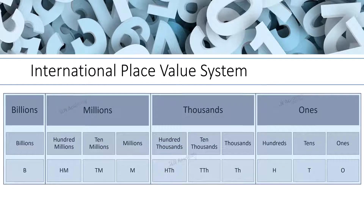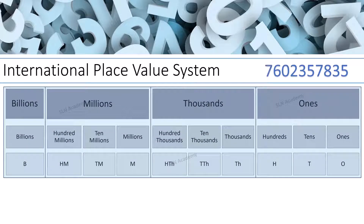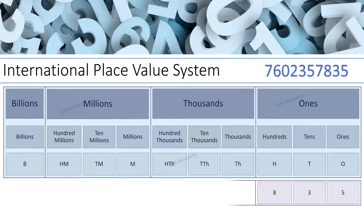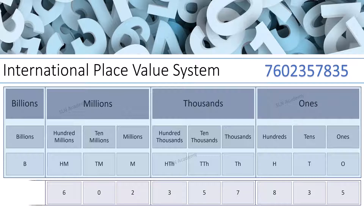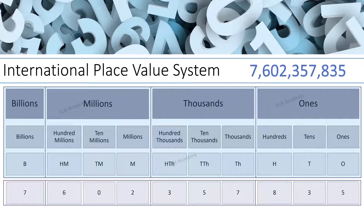Let us take a 10-digit number, 7,602,357,835, and place it in the International Place Value System. Let us start with the Ones digit. In the International System of Numbers, we separate the periods using commas by placing them after every three digits starting from the Ones digit.